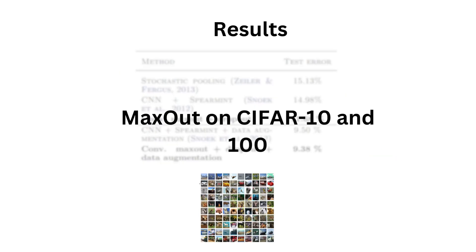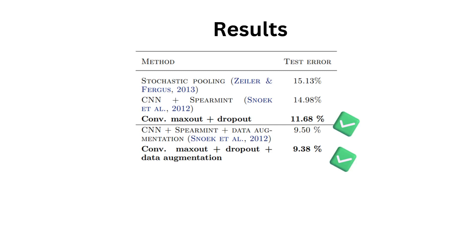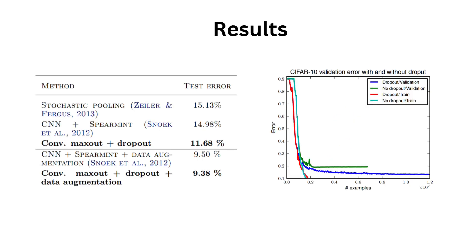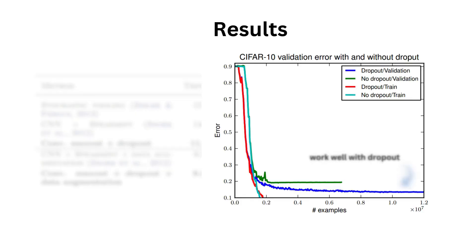On CIFAR 10 and 100, the network performed as follows. State-of-the-art at the time, with and without data augmentation for CIFAR 10. The authors tested the network on CIFAR 10 with and without dropout to see how much it helped. As we can see with the green and blue line, the network works well with dropout, which confirmed the initial intuition for building the maxout activation units in the first place.